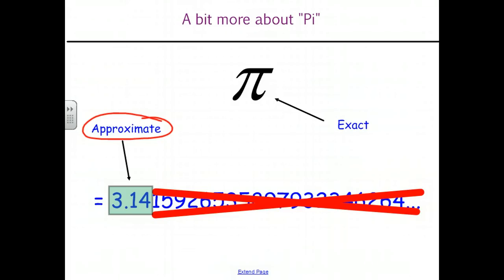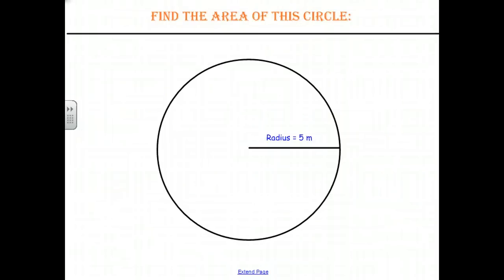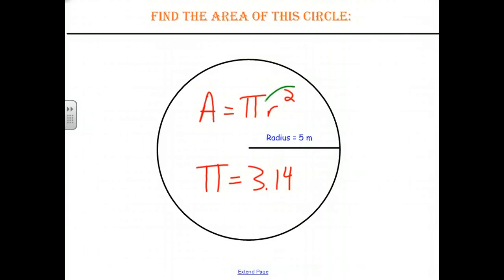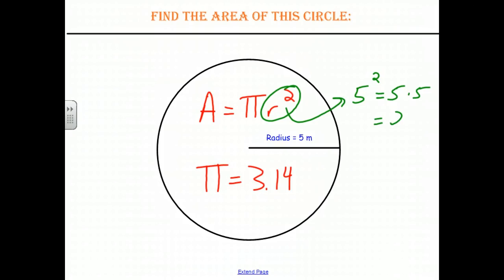So 3.14 times the radius squared gives us an approximate value, whereas leaving it as pi gives us an exact value. Let's find the area of a circle that has a radius of 5 meters. Go ahead and pause the video, remembering that the area of a circle is π times r squared, and that when we use the decimal version we approximate pi with 3.14. We're always going to start with the idea of the radius squared. The radius is 5, and 5 squared is the same as 5 times 5, which is 25.